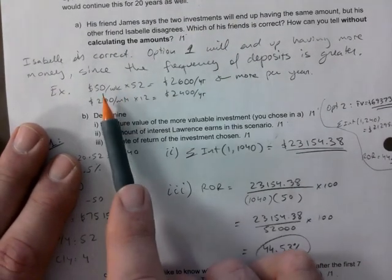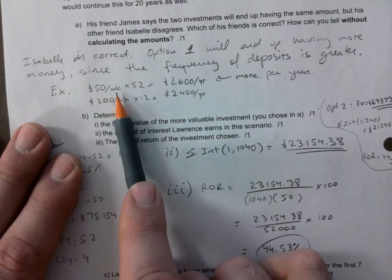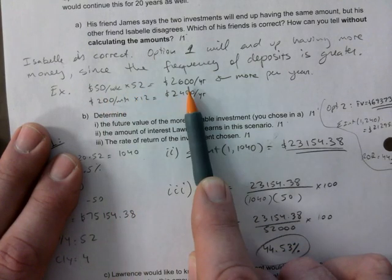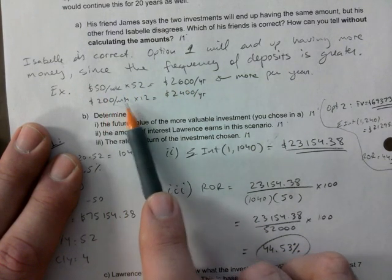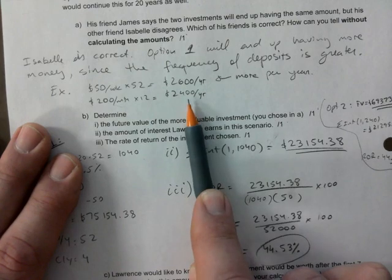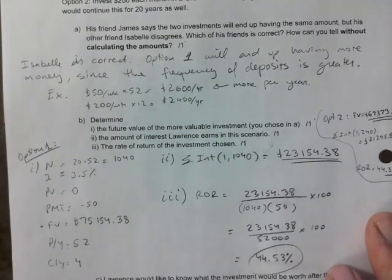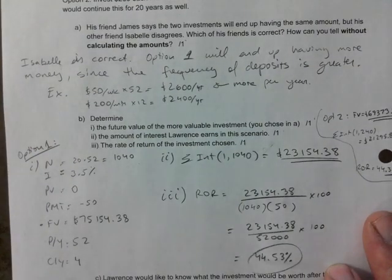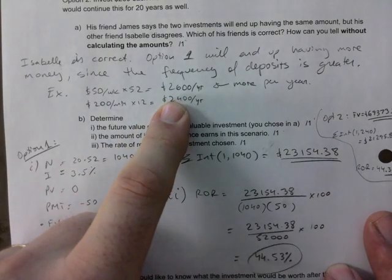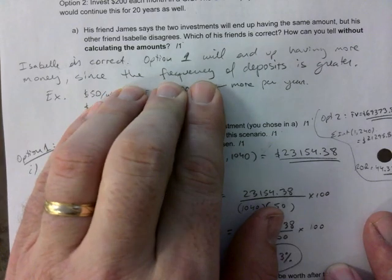If you do simple math here, $50 per week times 52 would be 26 a year, $2,600. $200 a month times 12 is $2,400. And you're like, didn't you say don't calculate? I meant, like, don't do the TVM solver for each and figure it out that way. How would you be able to do it without going into the complex calculations? But this doesn't have to be there.